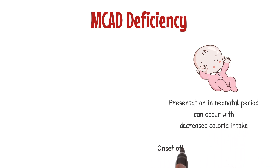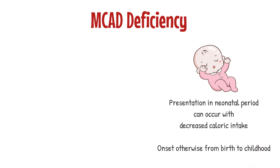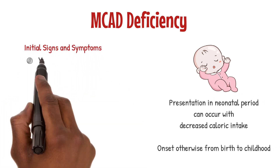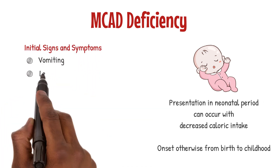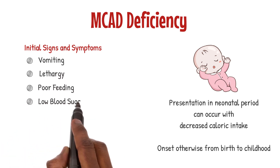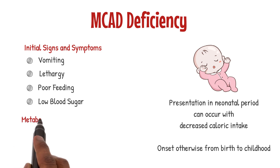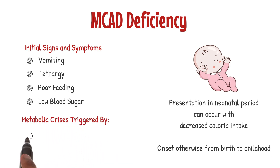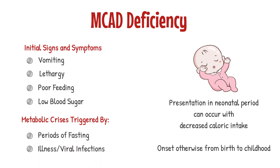Signs of MCAD deficiency typically appear anywhere from shortly after birth to early childhood. Early symptoms can include vomiting, lethargy, poor feeding, and low blood sugar. Metabolic crises related to MCAD deficiency can be triggered by periods of fasting, by illnesses such as viral infections, and/or during periods of increased energy demands when energy production relies increasingly on fat metabolism.